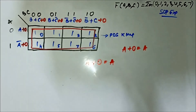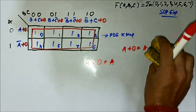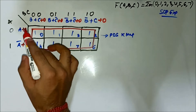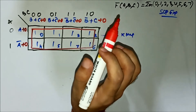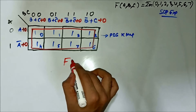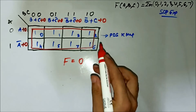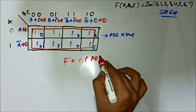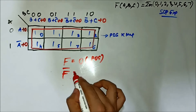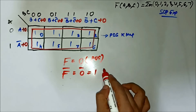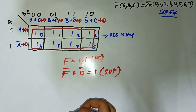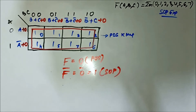After doing this, we see that zero is the common variable. But this is in POS form because it is the POS KMAP. In order to get the SOP form, we take the complement, so we get one. This is the SOP form. So this concludes the third question.